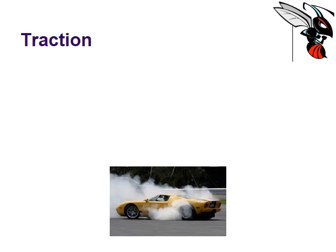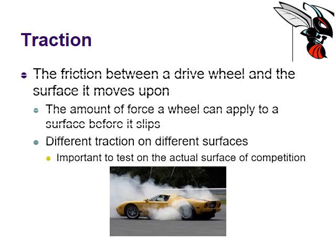When dealing with robotics, you actually need friction to work for you as well. Without friction — in the form of traction — you won't be successful at all. Traction is the friction between a drive wheel and the surface it moves upon — the amount of force a wheel can apply to a surface before it slips. You'll find different traction on different surfaces. A tire on concrete is going to have a lot more traction than a tire on ice. For robotics, you want to make sure you're testing on the actual surface the competition is going to be on.